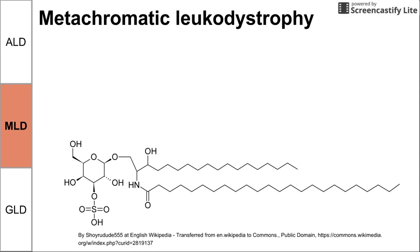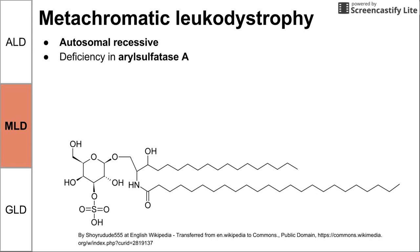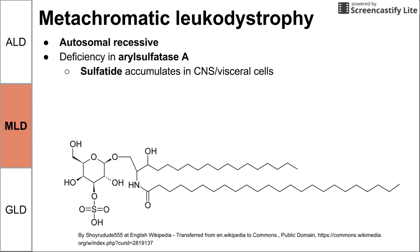Next, we have metachromatic leukodystrophy. This one is autosomal recessive. The deficiency here is in the enzyme arylsulfatase A. Because arylsulfatase isn't working, the molecule sulfatide accumulates in the central nervous system and in some visceral body cells. Sulfatide is actually a fatty acid, shown on the bottom there.